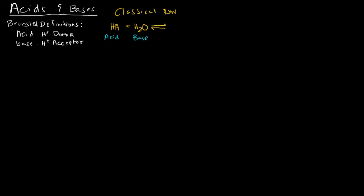If water accepts the proton, it becomes H3O+. If the acid gives up the proton, it ends up as A-, where A stands for anion because it carries that negative charge. These two species now have new names — H3O+ is now in an acid form, so it's called the conjugate acid.